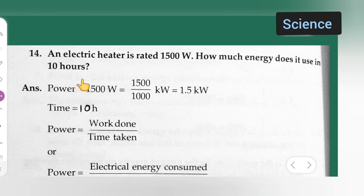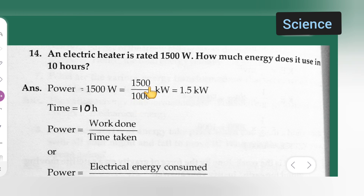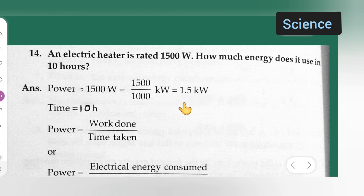The power given is 1500 watts. We need to convert it: 1500 divided by 1000 kilowatts is equal to 1.5 kW.